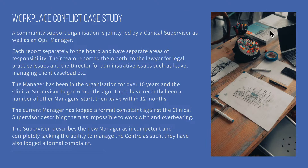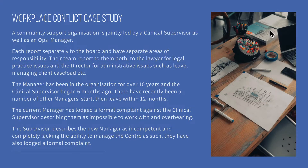So we've got a community support organization jointly led by a clinical supervisor as well as an ops manager — that matrix management type of thing, where you might be a case worker or a family domestic violence worker or homelessness worker. Someone will talk to you about your practice, and then you might also have an ops manager. Each of these people report separately to the board and have different areas of responsibility, different KPIs, and different job descriptions.